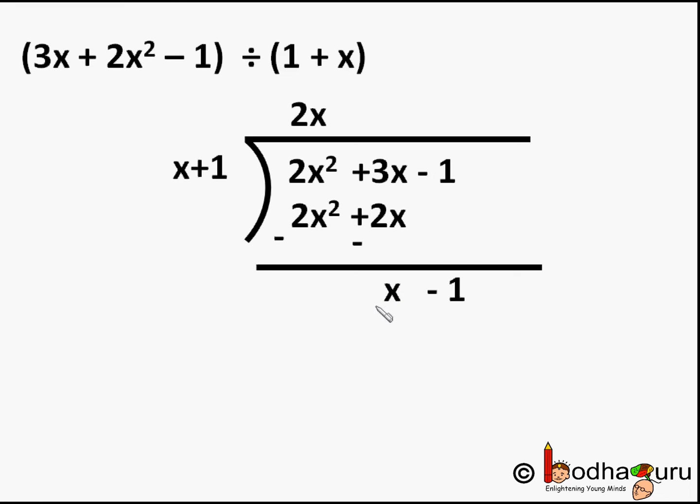Now we repeat the process. We divide the first term of this remaining dividend, that is x, by the first term of the divisor, that is x. So x by x is equal to +1. So +1 is the second term of the quotient. We write it above the line.